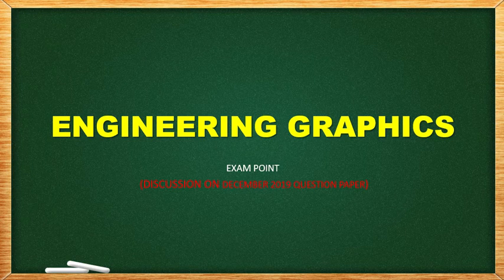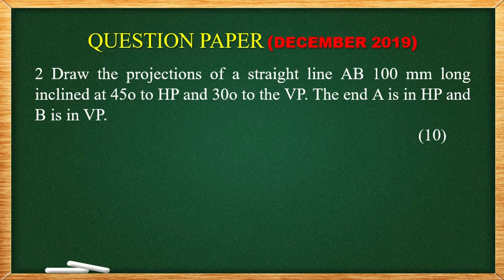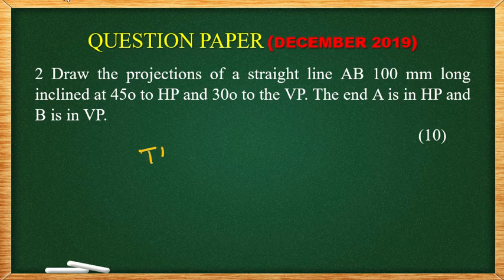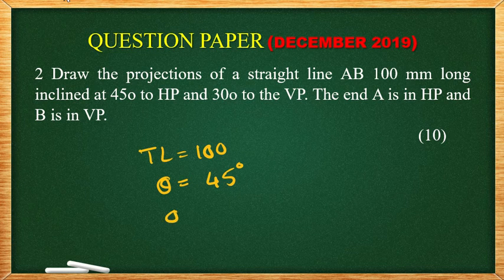Now the second question: Draw the projections of a straight line AB, 100mm long, inclined 45 degrees to HP and 30 degrees to VP. The end A is in HP and B is in VP. So true length TL is equal to 100mm, line inclined 45 degrees to HP, so theta is equal to 45 degrees. Phi, the true inclination with VP, is equal to 30 degrees.